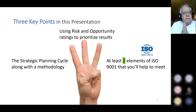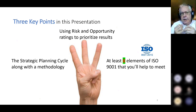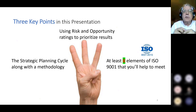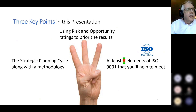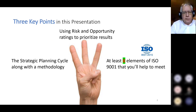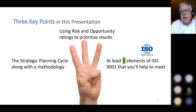Because we're going to be looking at a lot of different things about strategic planning, there are really three key points. One is we're talking about a strategic planning cycle along with an introduction to a methodology. The second thing is we're going to be using Risk and Opportunity Ratings to actually prioritize the results of the strategic planning meetings. And the third thing is at least eight elements of ISO 9001 that you'll be helping to meet.